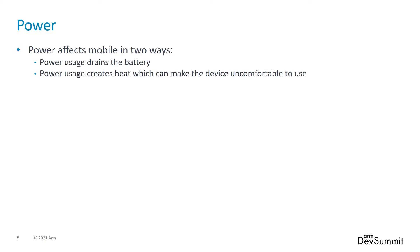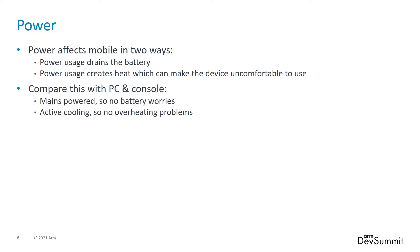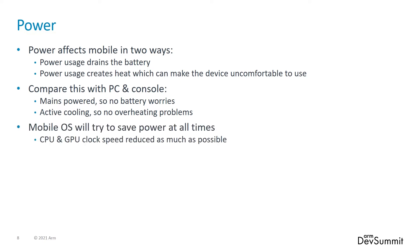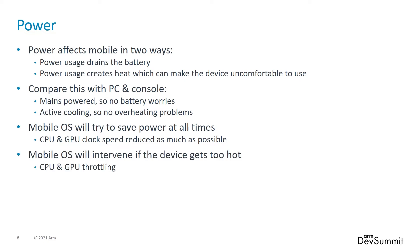The extra dimension to mobile is the effect of power consumption, and this is what can affect stability. Power consumption affects your game in two ways: it drains the battery, which can truncate play sessions, and it generates heat, which without mitigation can make the device too hot for comfort. To work around these problems, the OS will first try to save power, monitoring CPU and GPU load and reducing clock frequencies as much as possible without impacting frame rate. Secondly, it will intervene if the device gets too hot, actively reducing clock frequencies below the levels required for a stable frame rate.